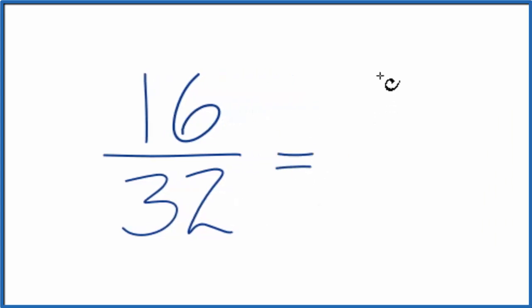We could say 16 divided by 16 is 1. 32 divided by 16 is 2, because 2 times 16 is 32, and we'd be done. We've simplified the fraction 16 32nds down to 1 half.